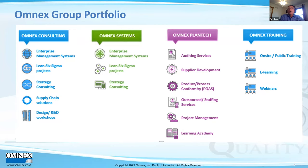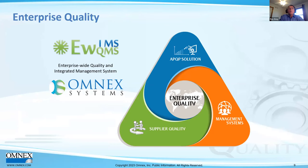OMNEX also has a sister organization called OMNEX Plantech, which provides auditing services and outsourced staffing. Their OMNEX Systems software includes BOS for management review, document management, audit management, MSA, gauge management, TPM for maintenance, and a supplier module.